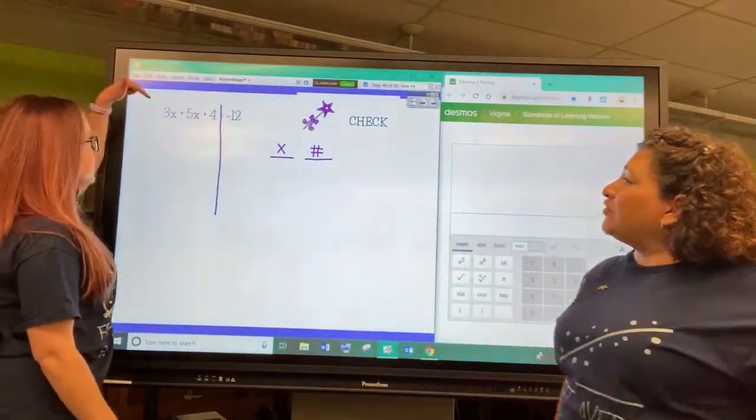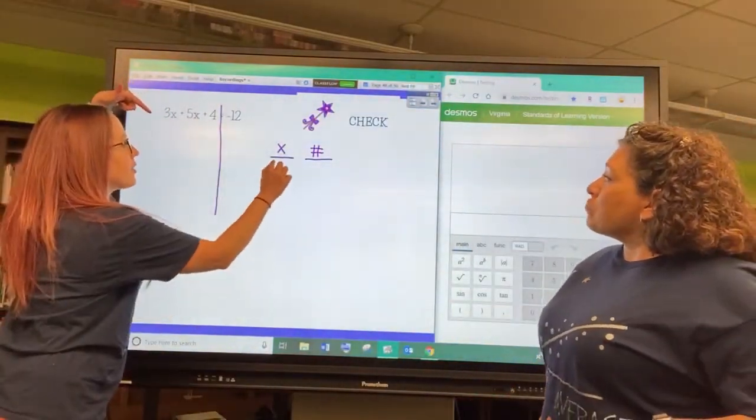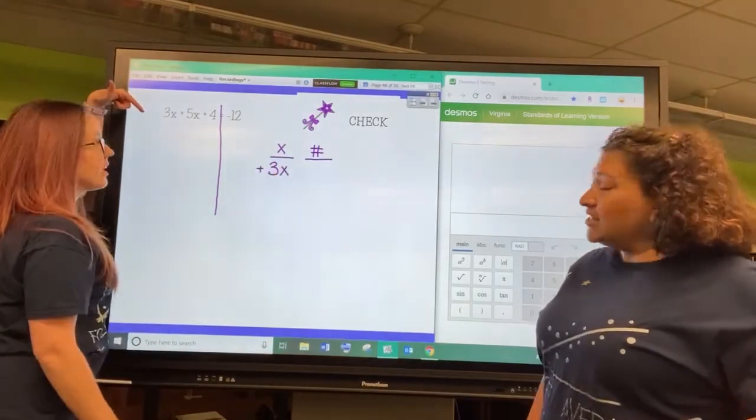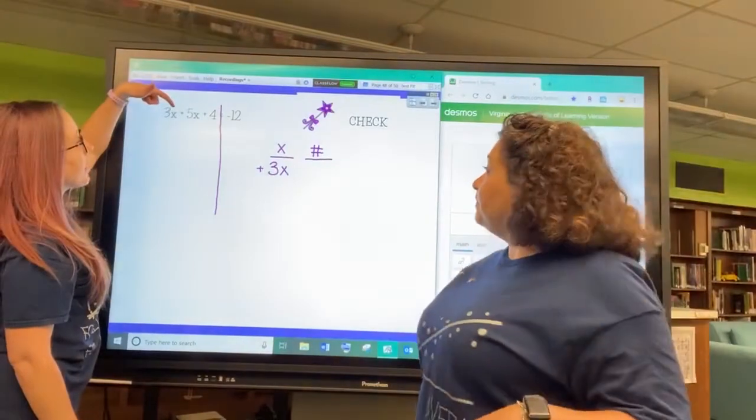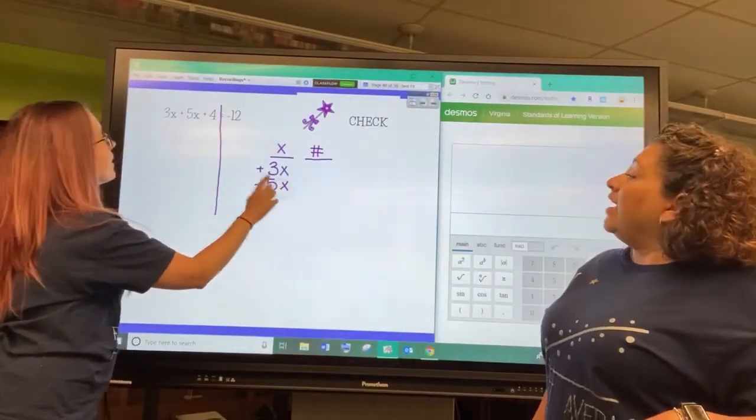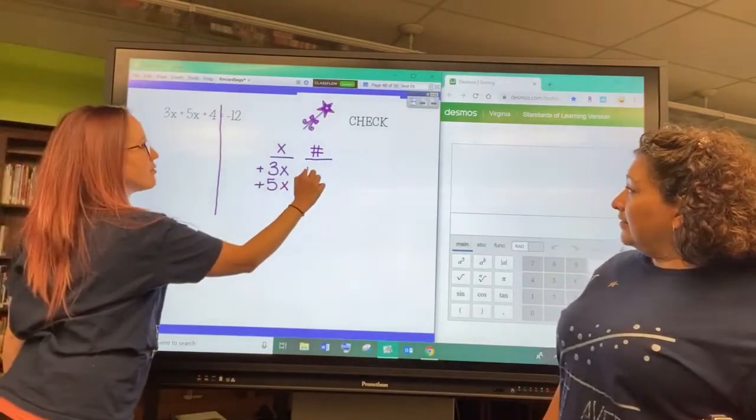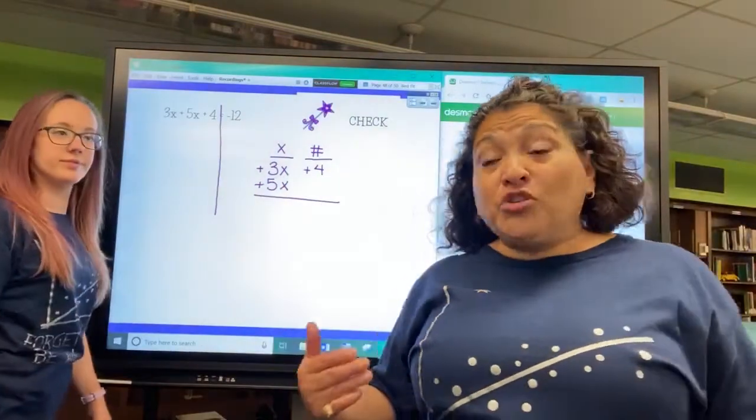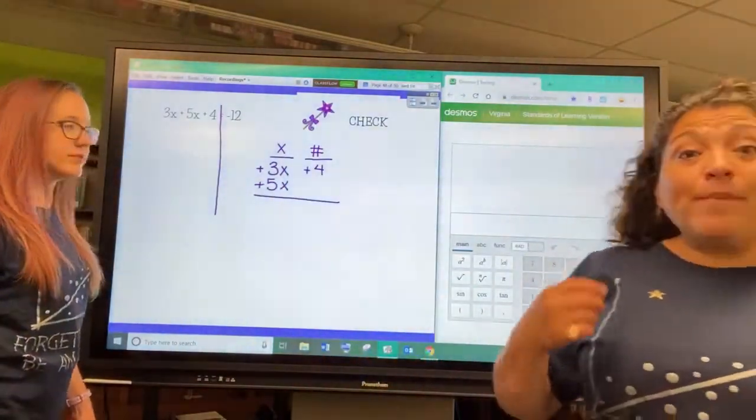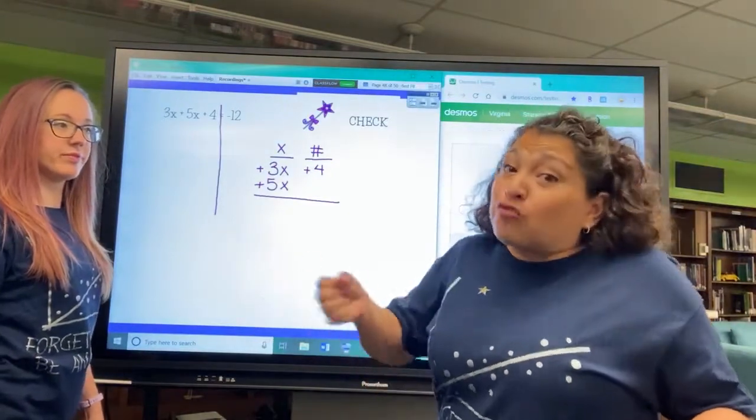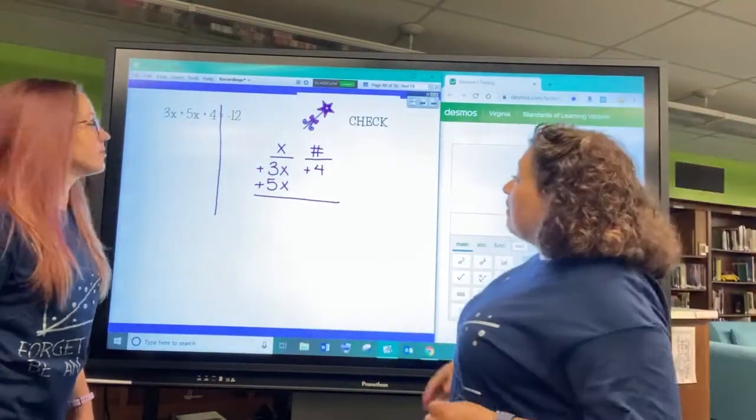Ms. Benson, what are we going to put in over here first? We've got a 3X, and that 3X is positive. Got to keep that sign. And we've got a positive 5X and a positive 4. As Ms. Benson puts those together for us, just remember, always move the sign that's in front of the term. It goes with it.